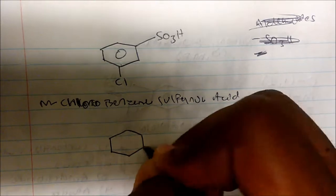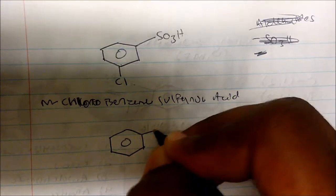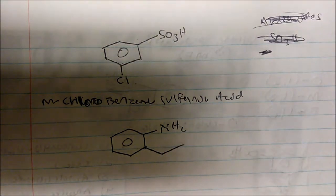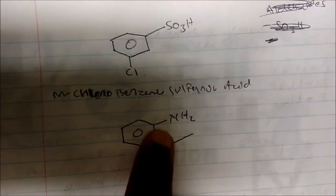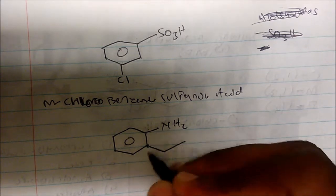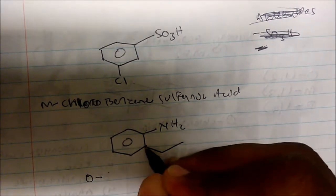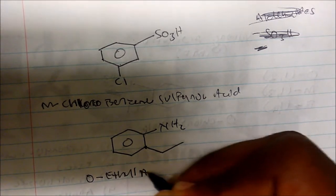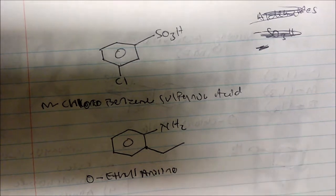For the last example, we have an amine (NH2) and an ethyl R group on the ring. The amine makes the parent name aniline. The ethyl group is 1,2-substituted, so this is o-ethylaniline. That's how we name aromatic structures — the key is recognizing patterns, knowing your hierarchy, and it becomes fairly easy.